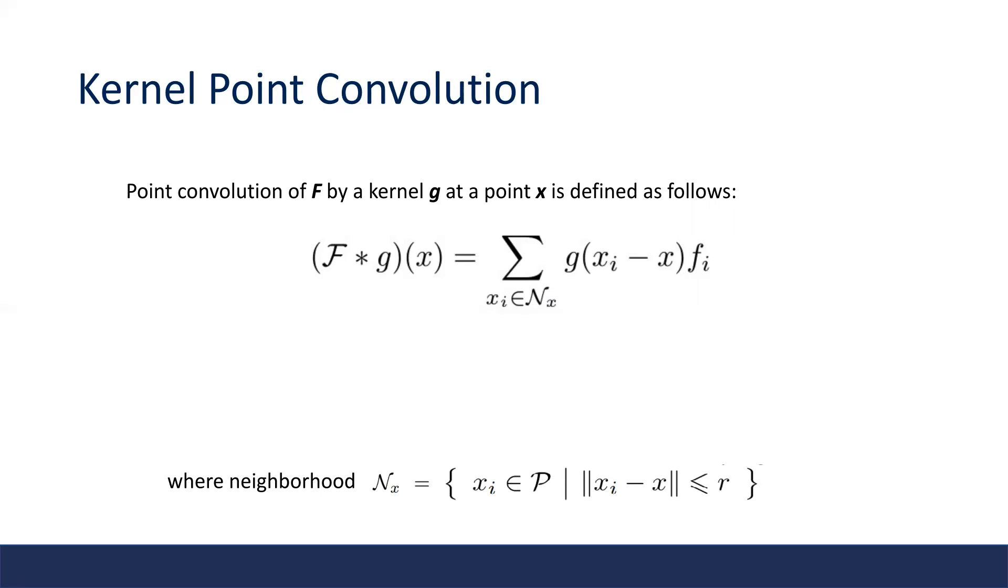Specifically, activation of applying kernel g to input data f at point x equals a weighted sum of neighboring point features, where the neighborhood N here is defined as a ball in 3D space with radius r. The kernel function g defines the weight for each neighboring point, and intuitively, we want it to apply different weights to different areas inside the neighborhood.